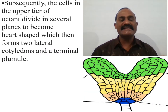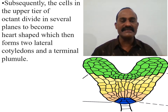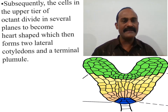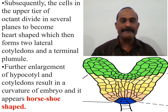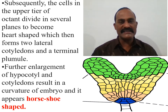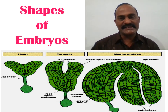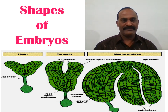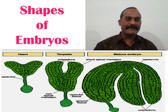Subsequently, the cells in the upper tier of the octant divide in several planes to become a heart-shaped structure from which two lateral cotyledons and a terminal plumule are formed. Further development of the hypocotyl and cotyledon results in a curvature of the embryo, and very soon it develops a horseshoe-shaped structure representing the mature stage. The embryo thus passes through a unicellular stage, then multicellular, acquiring heart-shaped, elongated torpedo-shaped, and finally horseshoe-shaped forms.